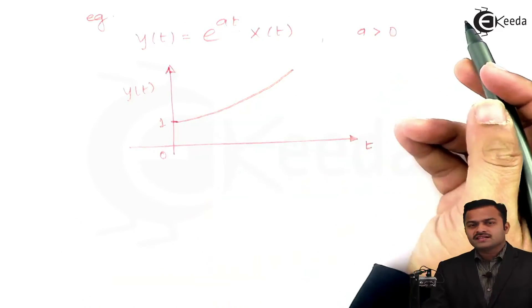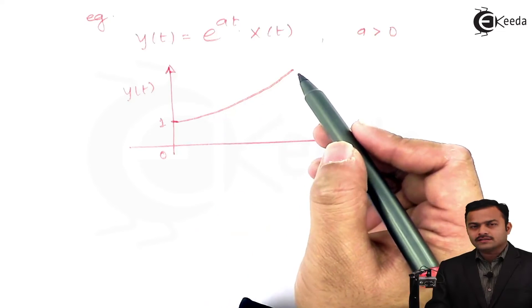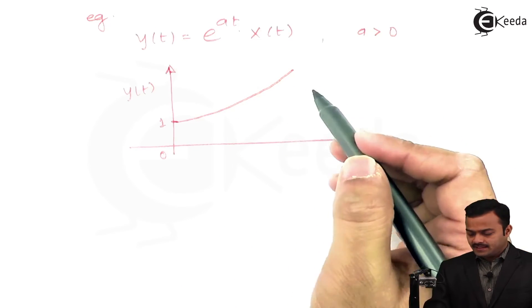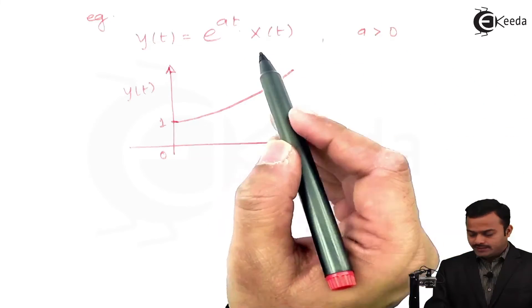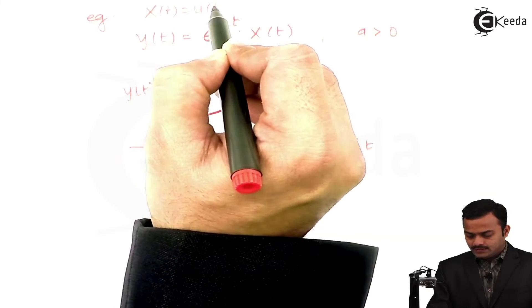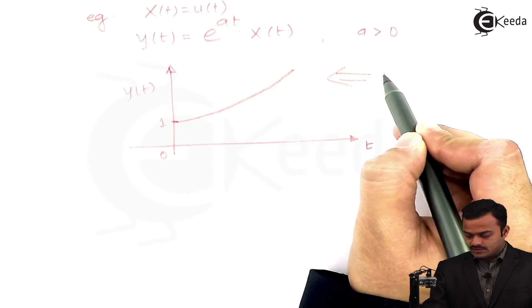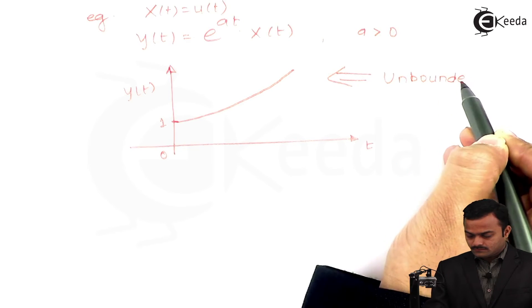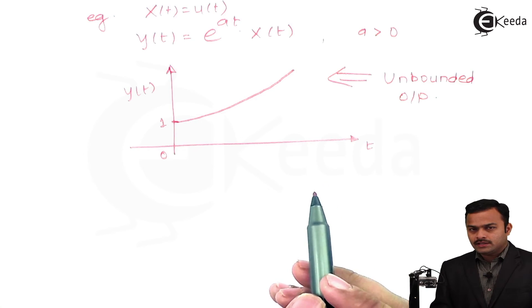It is exponentially increasing. Meaning what? Its values keep on accumulating, keep on increasing. In the end I will get a magnitude tending to infinity. For a bounded input where x(t), the input, is nothing but u(t), a bounded input, the response I am getting over here is unbounded.